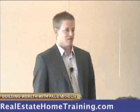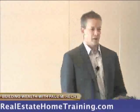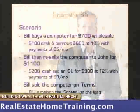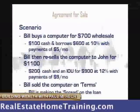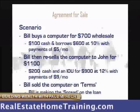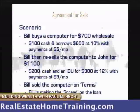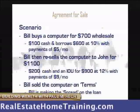So I'm going to paint a picture for you. Bill buys a computer for wholesale — he buys it for $700. He borrows $100 and he borrows $600 in a loan from family, friends, or whoever he gets it from, at 10% interest, and his payments are $5 a month. So he's essentially borrowing it to buy this computer.